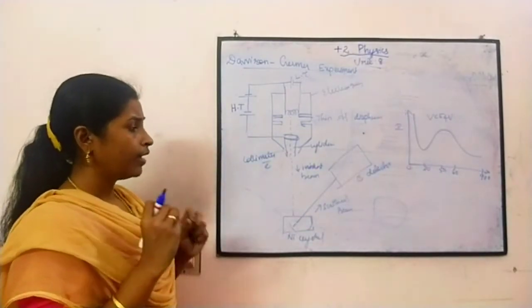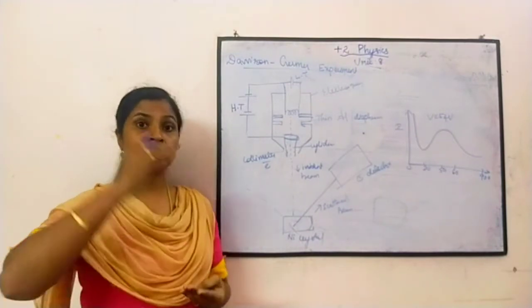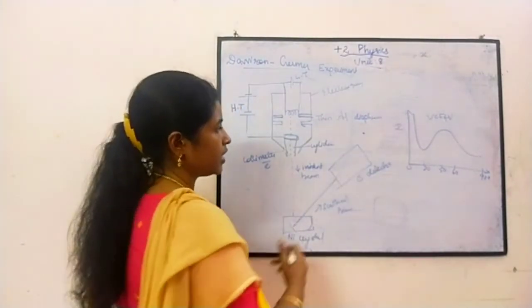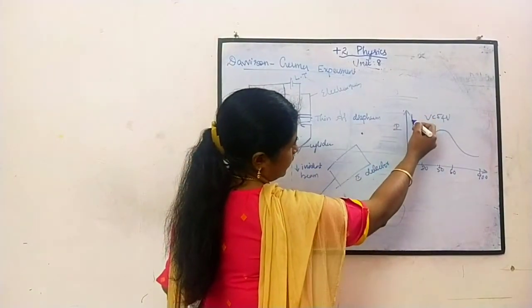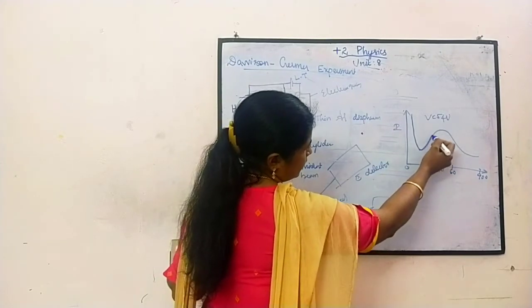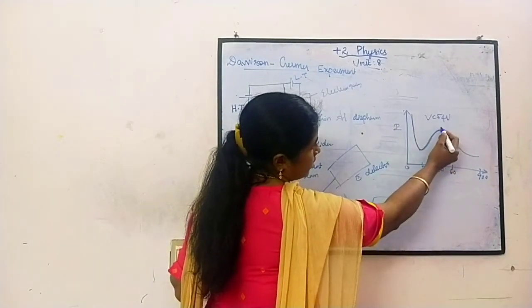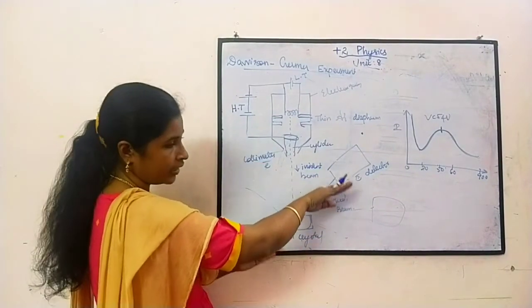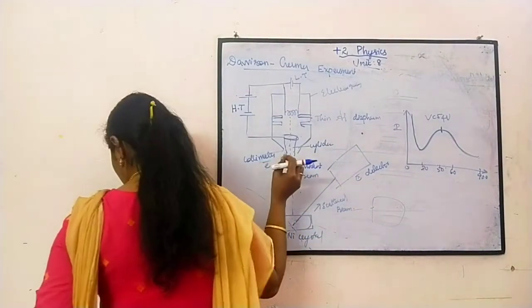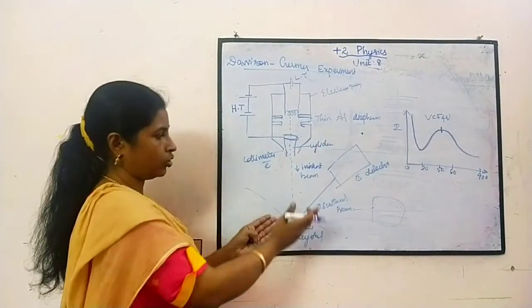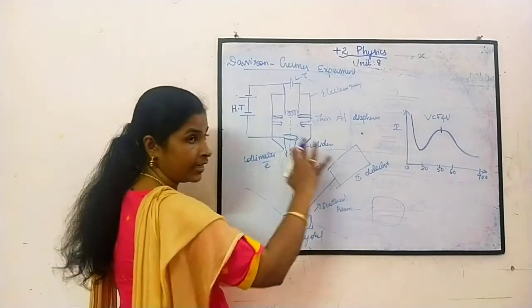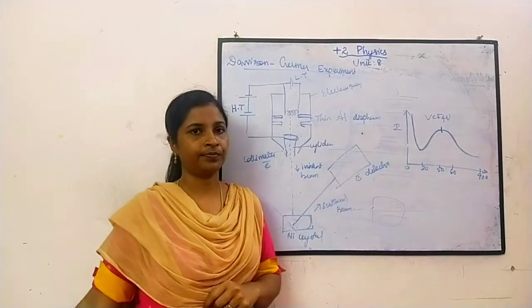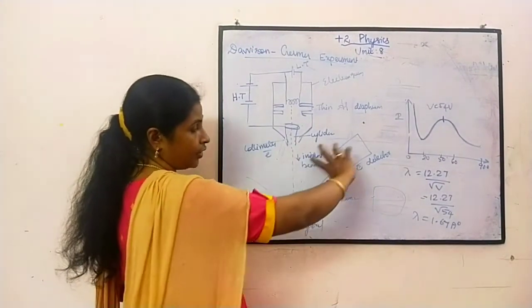When we see at a particular angle, the intensity will be very high. This is given in the graph. You see at zero degrees, the intensity is like this. It is decreasing, and at 30 degrees again it is increasing, and at 54 volts it reaches the peak. And again it will start to decrease.